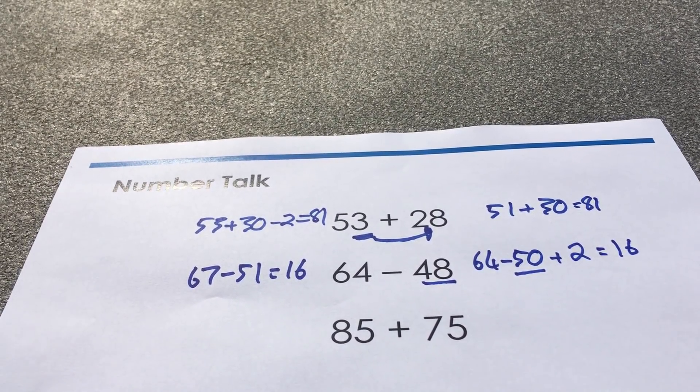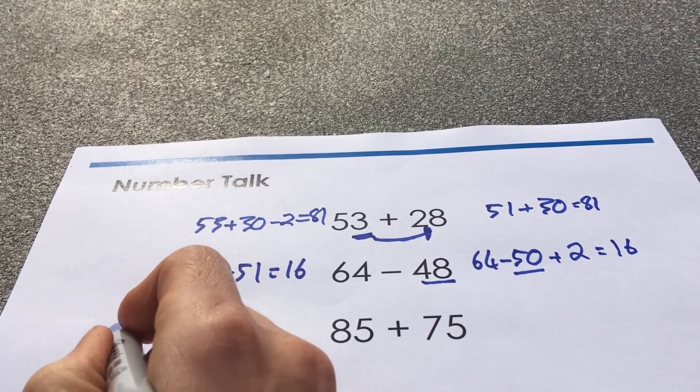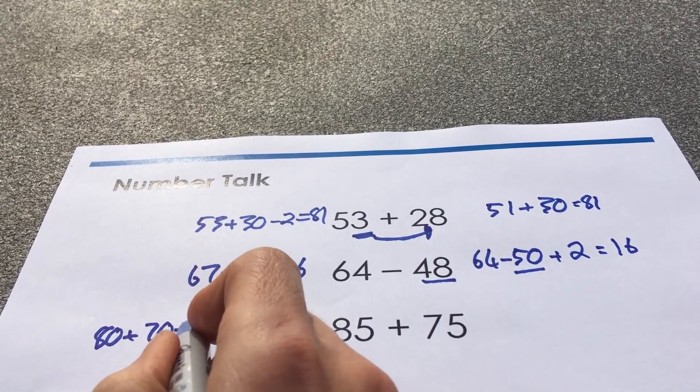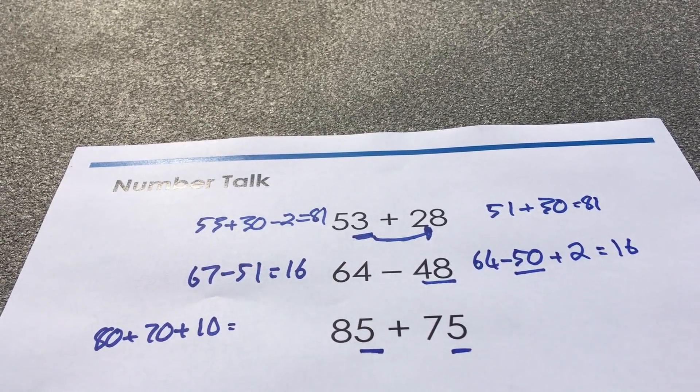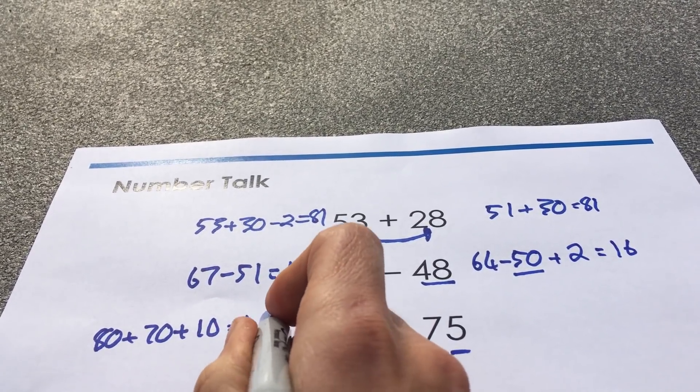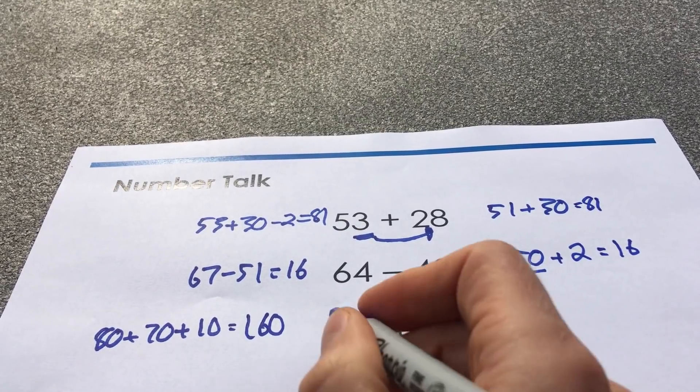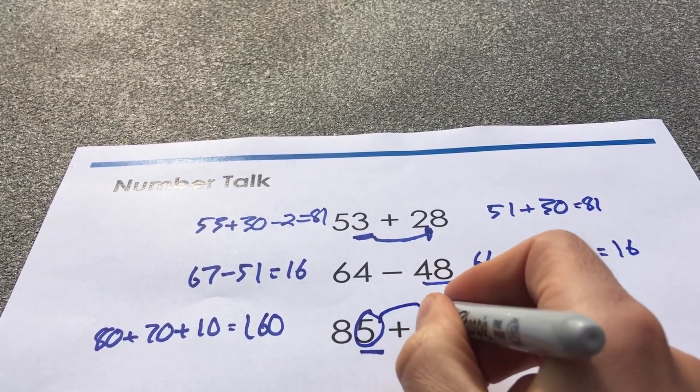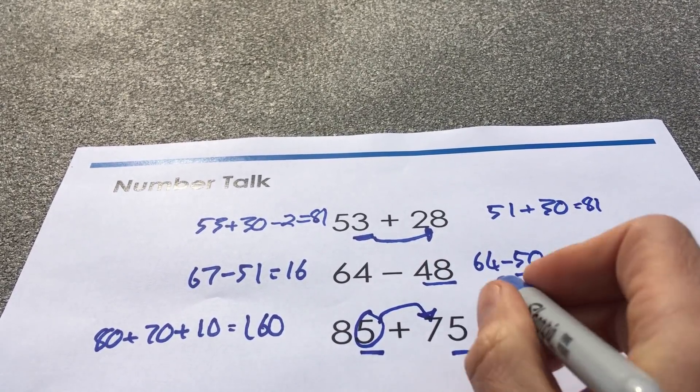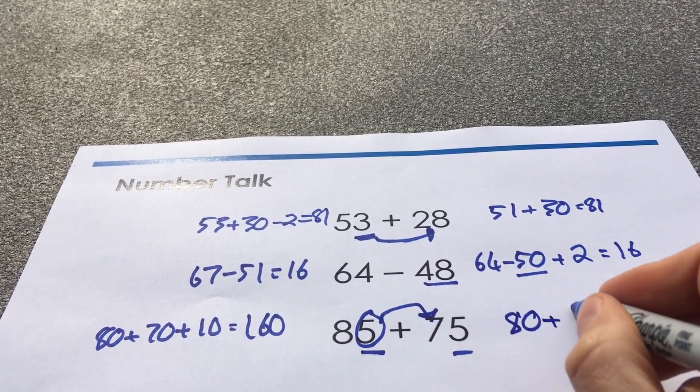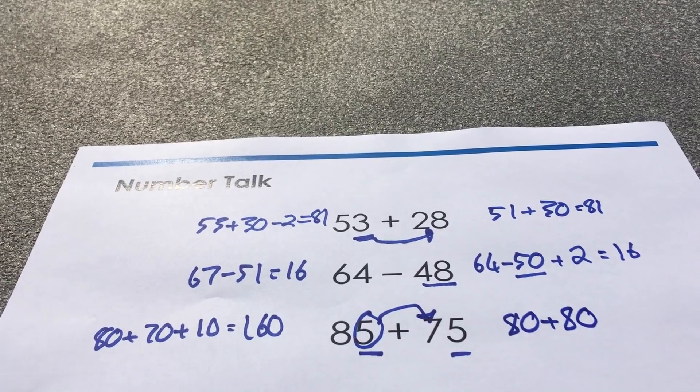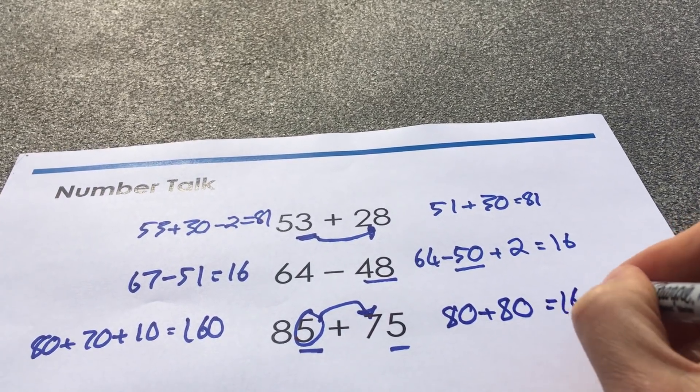85 plus 75. Well, I could do 80 plus 70 plus 10, and I've got that 10 by adding the 5 and the 5. 80 and 70 is 150, add the 10, 160. Oh my favourite, I could take this 5 and just put it onto here. So the 85 becomes an 80, the 75 also becomes an 80 by coming 5 more. Double 80, 160.